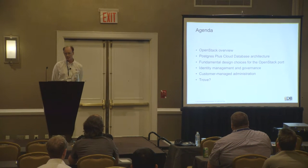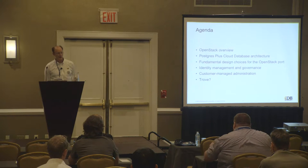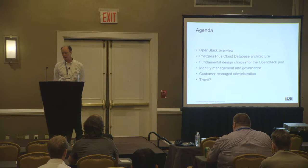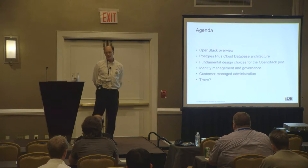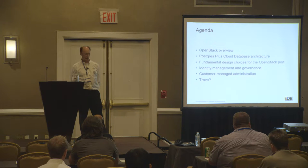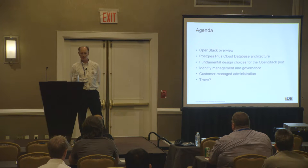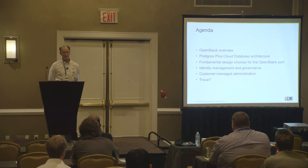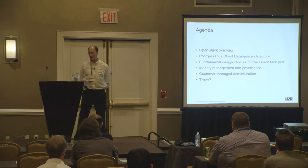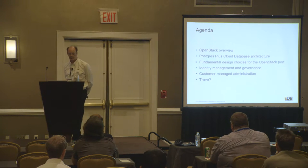That sets the stage for other deployments in other cloud provider contexts. Some of the specific things we'll talk about are identity management, governance — very different model on Amazon than from OpenStack. Customer-managed administration is a topic: on Amazon, we are the ones who administer how people deploy our cloud database there. When we move the product to OpenStack and it runs in a private context, we won't have that access — we're going to enable the customer to take on roles that we've done before. And finally, Trove often comes up as a question when we discuss OpenStack, so we wanted to address that as well.